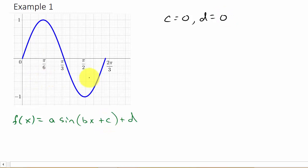So c tells us there's a horizontal shift. d tells us there's a vertical shift. We've got c and d taken care of. They're both zero.